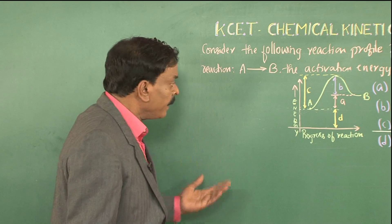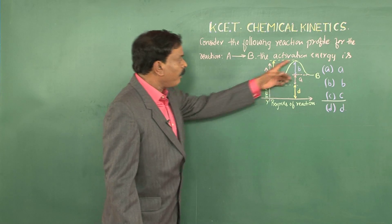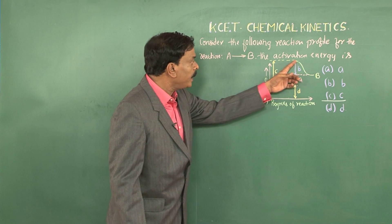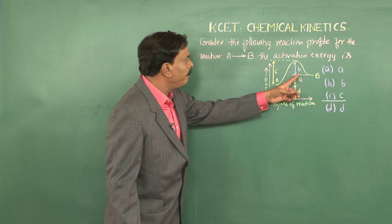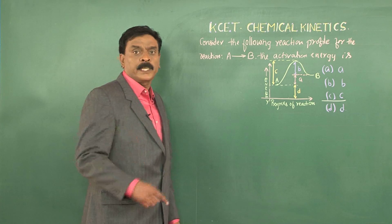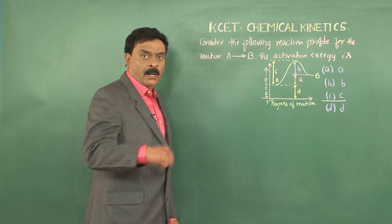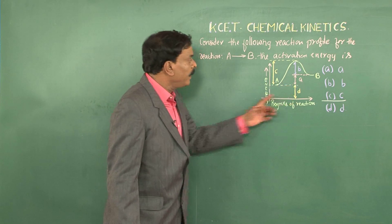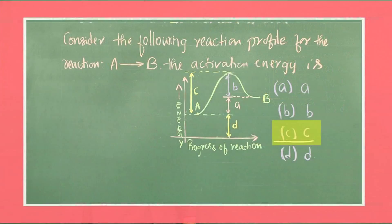The difference in energies between that for the forward reaction and that for the backward reaction, that is the difference between C and B, that is A gives a measure of whether energy is being liberated or absorbed. In other words, it indicates whether the reaction is exothermic or endothermic.